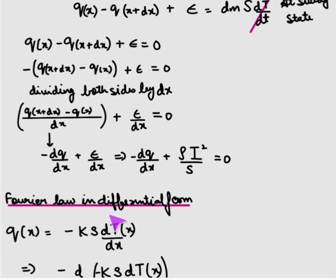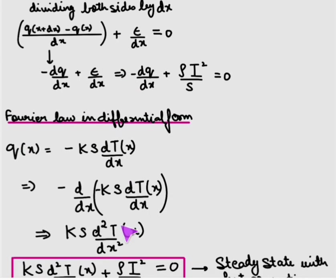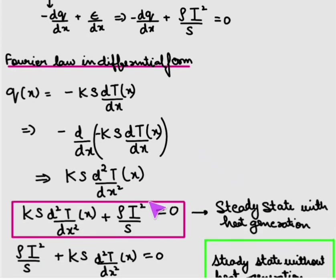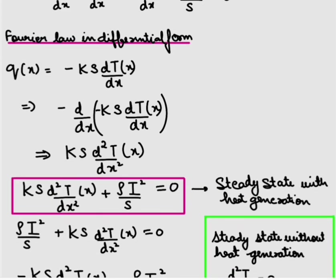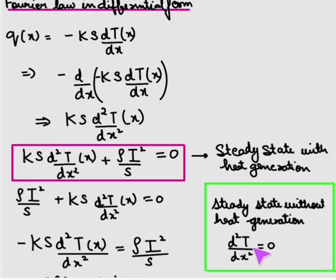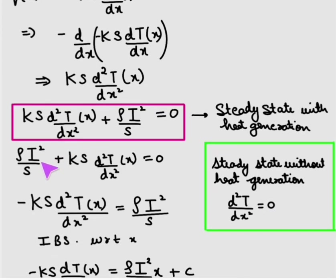Now substituting the value of Q from the Fourier law in differential form, Q = -K·s·(dT/dx), into the equation gives: K·s·(d²T/dx²) + rho·I²/s = 0. This is the steady-state equation with heat generation. For steady state without heat generation, the source term is zero and we get d²T/dx² = 0.